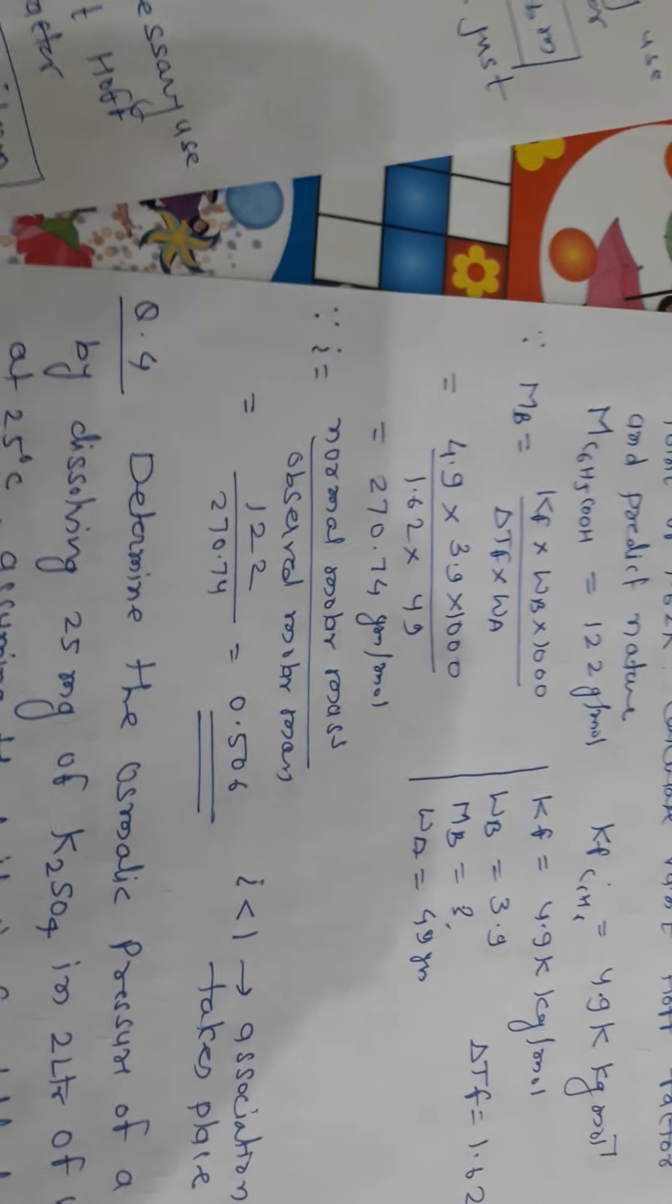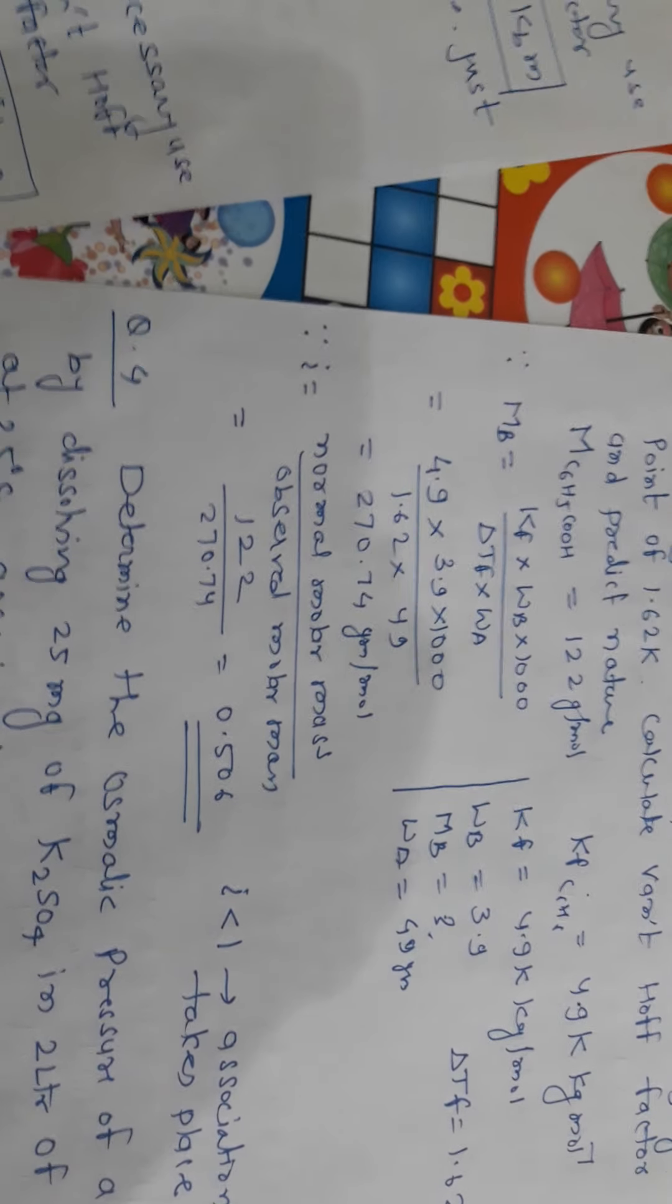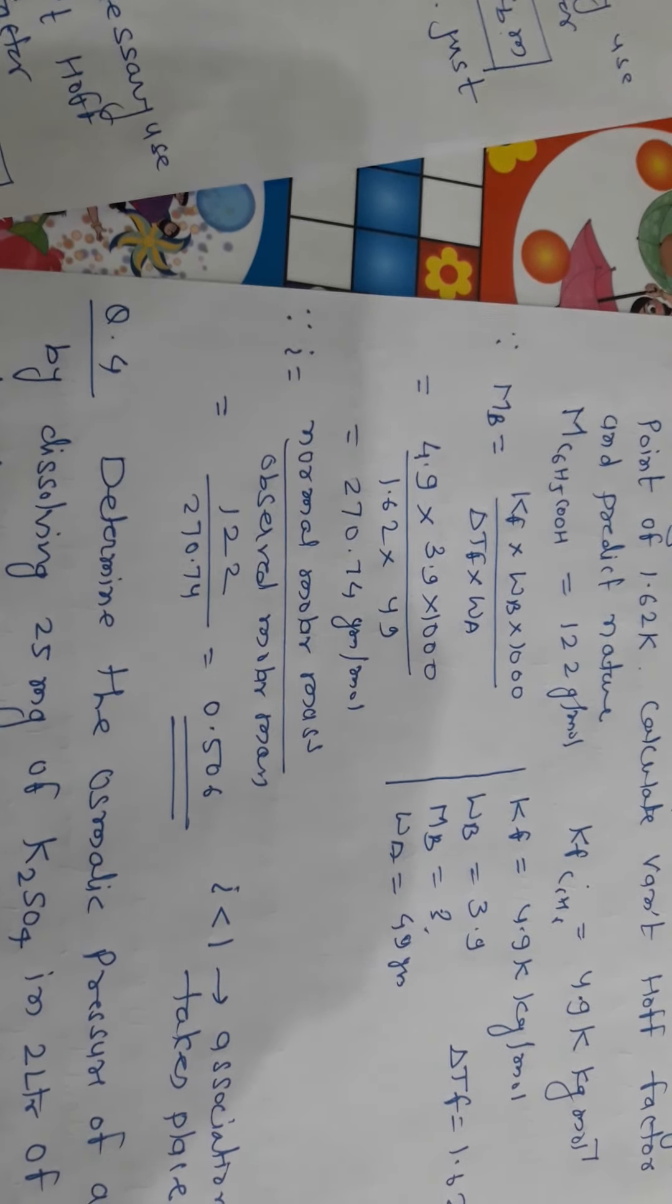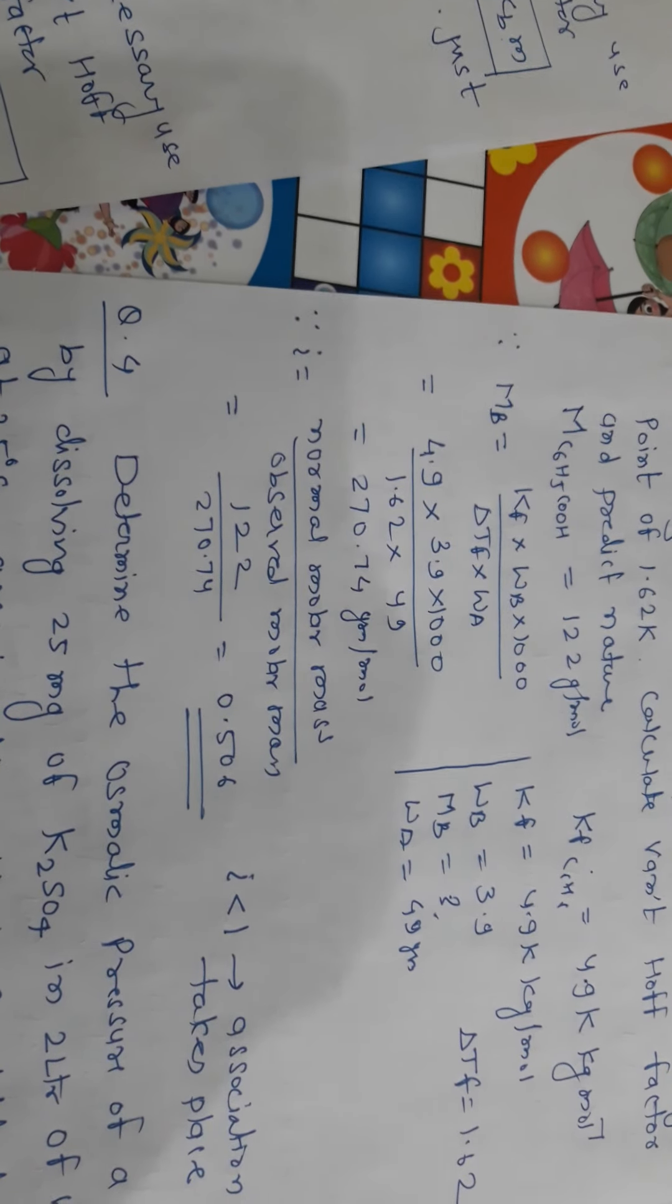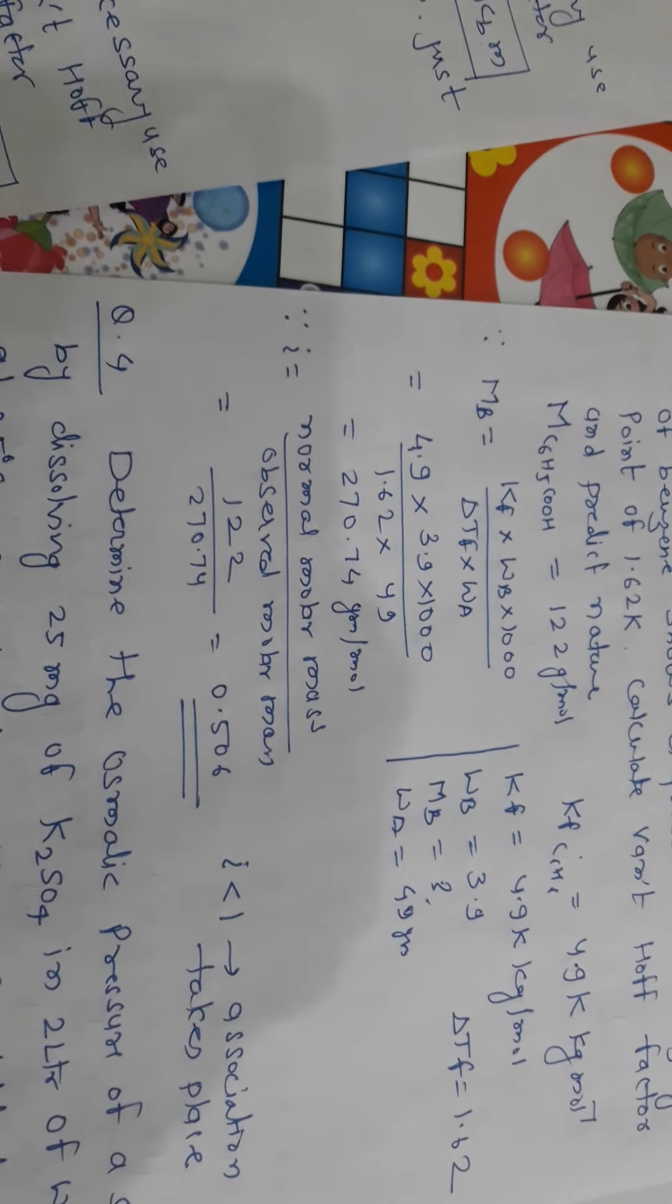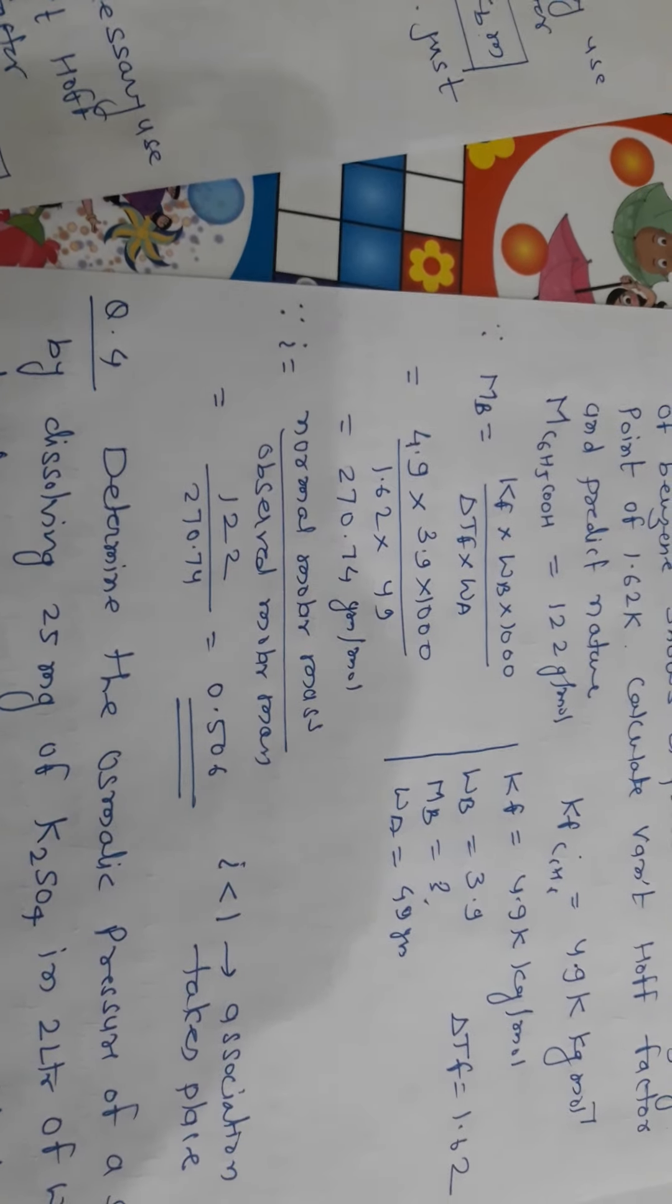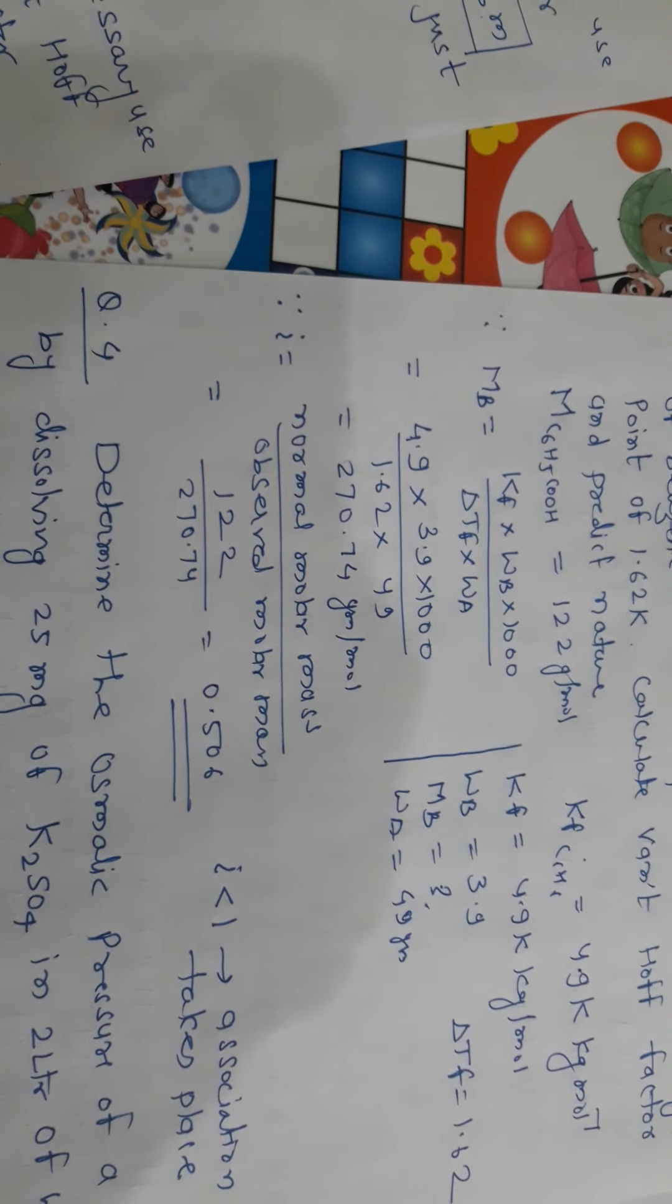So by putting the value of Kf, Wb, ΔTf and Wa in given formula, we will get 4.9 into 3.9 into 1000 upon 1.62 into 49. By solving all these, the value of Mb becomes 270.74 gram per mole.